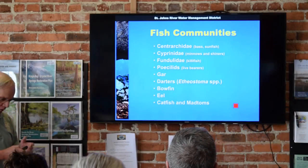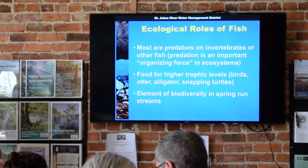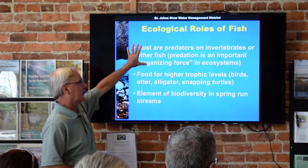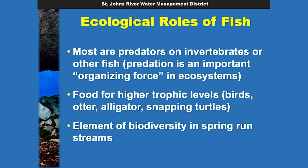The fish community is pretty much the same as what we see in other Florida flowing water ecosystems, rivers and streams. Ecologically, fish are mainly important predators — most fish feed on invertebrates or on other fish, and predation is an important organizing force in ecosystems. Of course they themselves are food for other things: birds, otter, alligators, snapping turtles. And again, they're an element of the biodiversity in spring run streams.